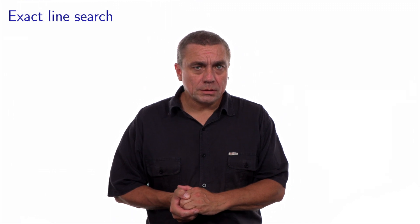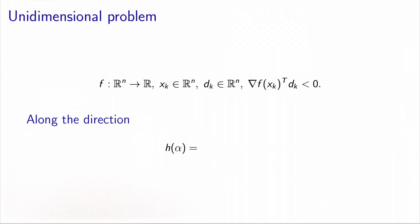The first method we will see is called exact line search, because we will try to approximate a local minimum of the function along the direction.